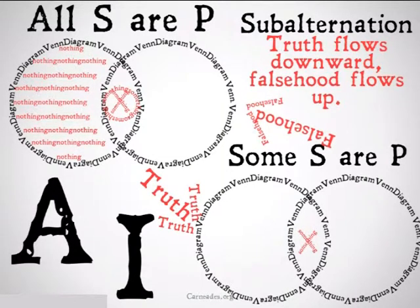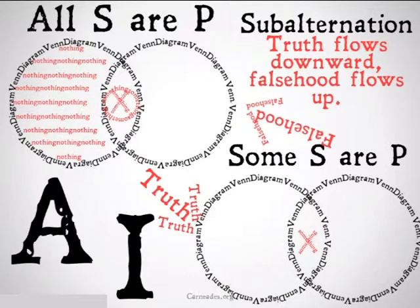It's going to be the fallacy of illicit subalternation if you claim that truth can flow up or falsehood can flow down. Just because it's not the case that all S are P does not mean that it's not the case that some S are P. Similarly, just because it is the case that some S are P, it doesn't mean that it is the case that all S are P.